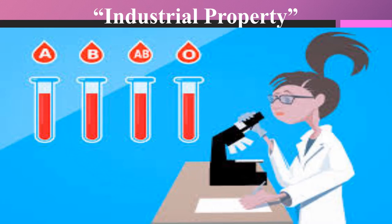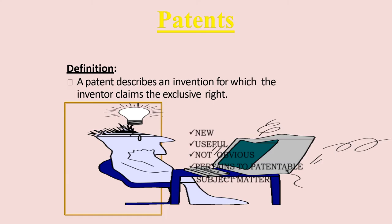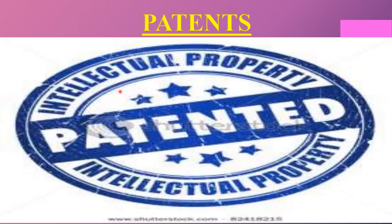What is a patent? A patent describes an invention for which the inventor claims the exclusive right. It can be patentable if it is new, useful, not obvious, and pertains to patentable subject matter. Patents are covered under the Patent Act of 1970, amended by the Patent Act 2005.